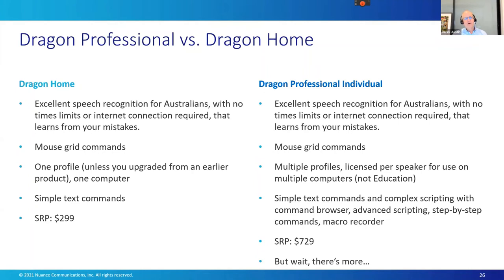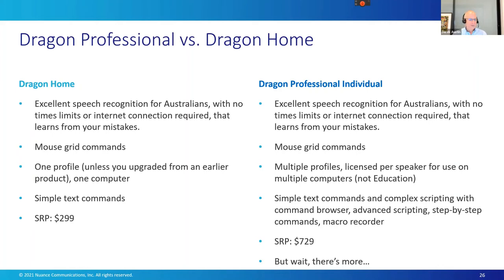Dragon Home has simple text commands. Dragon Professional Individual adds complex scripting with a command browser, advanced scripting using a Visual Basic-style language, step-by-step commands, and a macro recorder. Dragon Professional also does transcription — if you have a recording of your speech or someone else's, it will transcribe it into a text file you can correct. It supports additional applications with built-in commands — for example, you can say 'next slide' or 'previous slide.' It supports the Power Mic, allowing you to configure buttons within Dragon. The prices have recently increased, but Dragon Home is around $299 and Dragon Professional around $729.